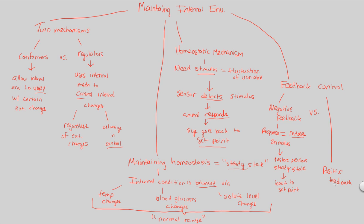Positive feedback is less common but still important. In positive feedback, the response amplifies the stimulus rather than reducing it. A useful example is birth: when the first contraction occurs, a positive feedback loop triggers another contraction, then a stronger one, amplifying contractions more and more for a successful birth. This is usually regulated by the hormone oxytocin.